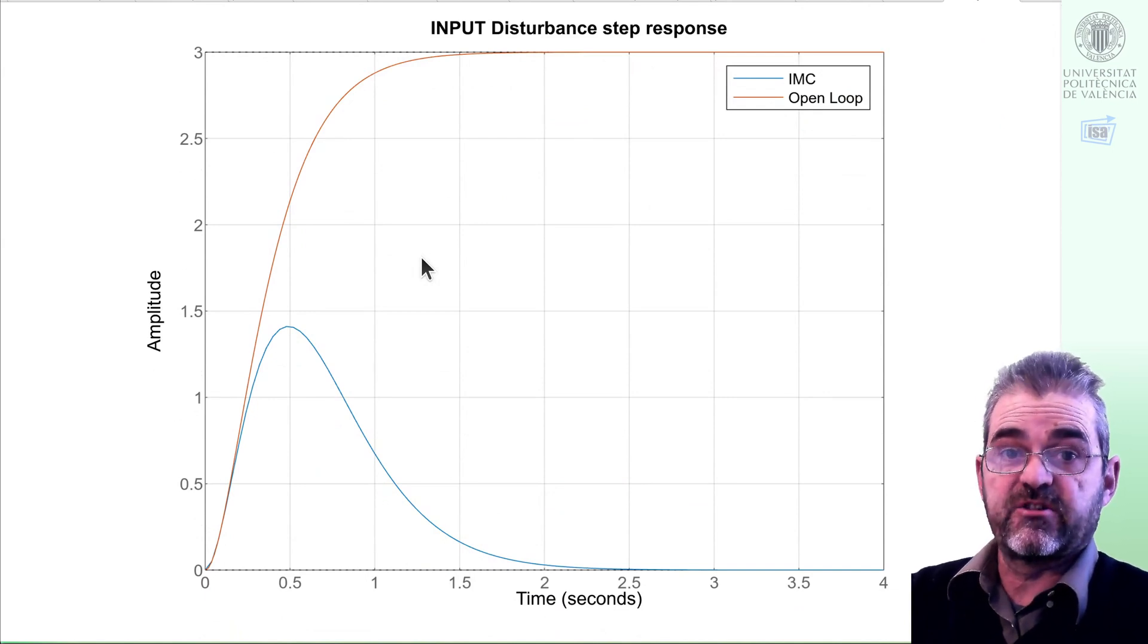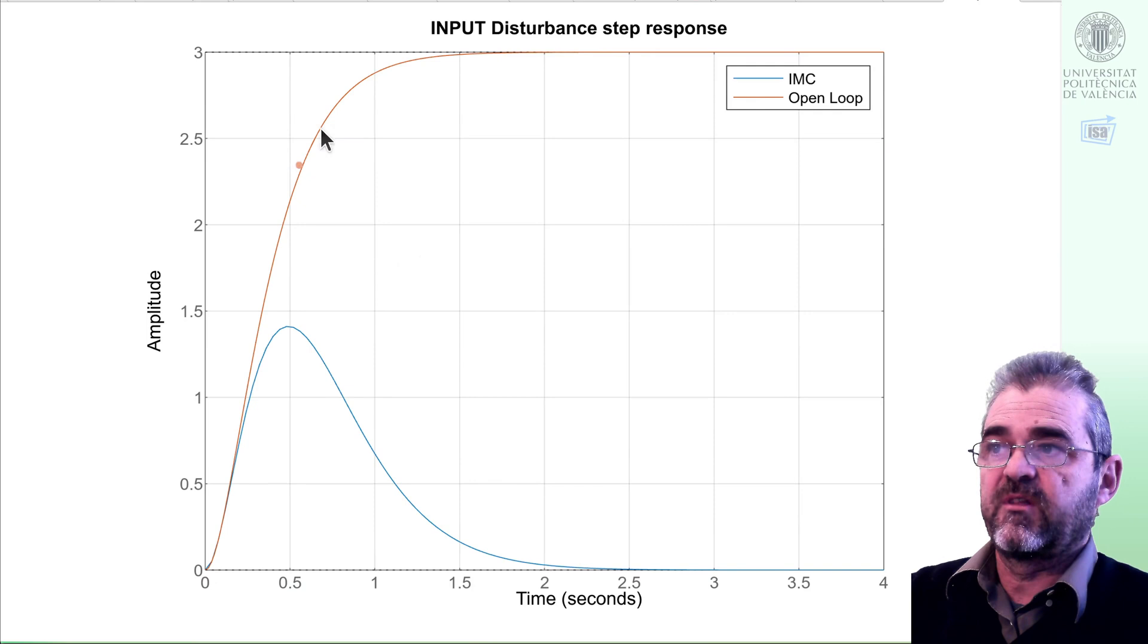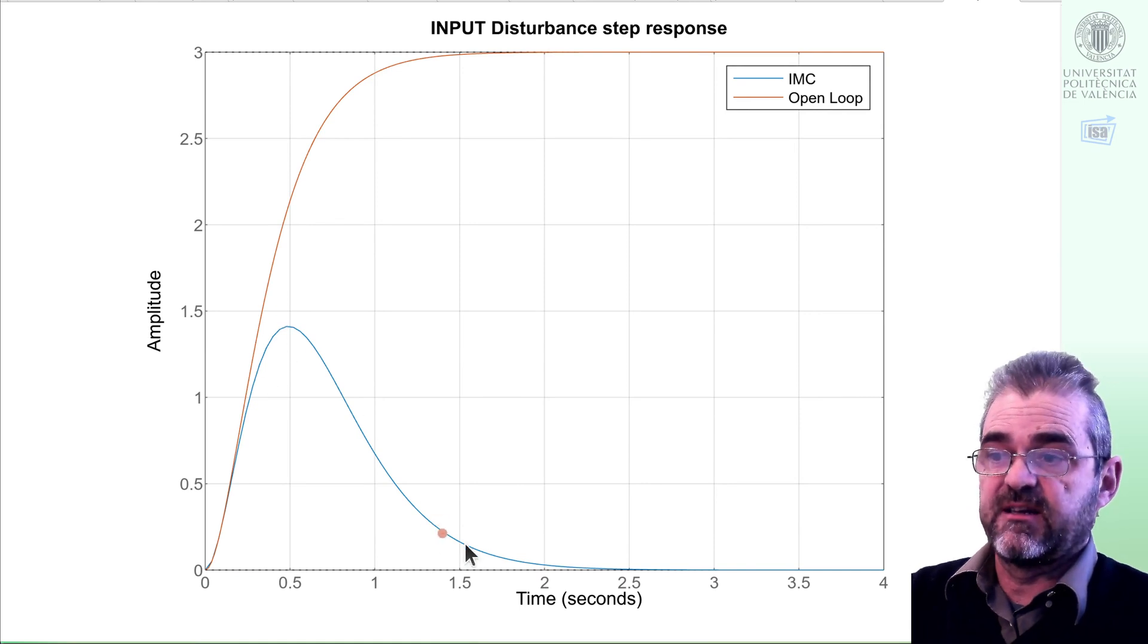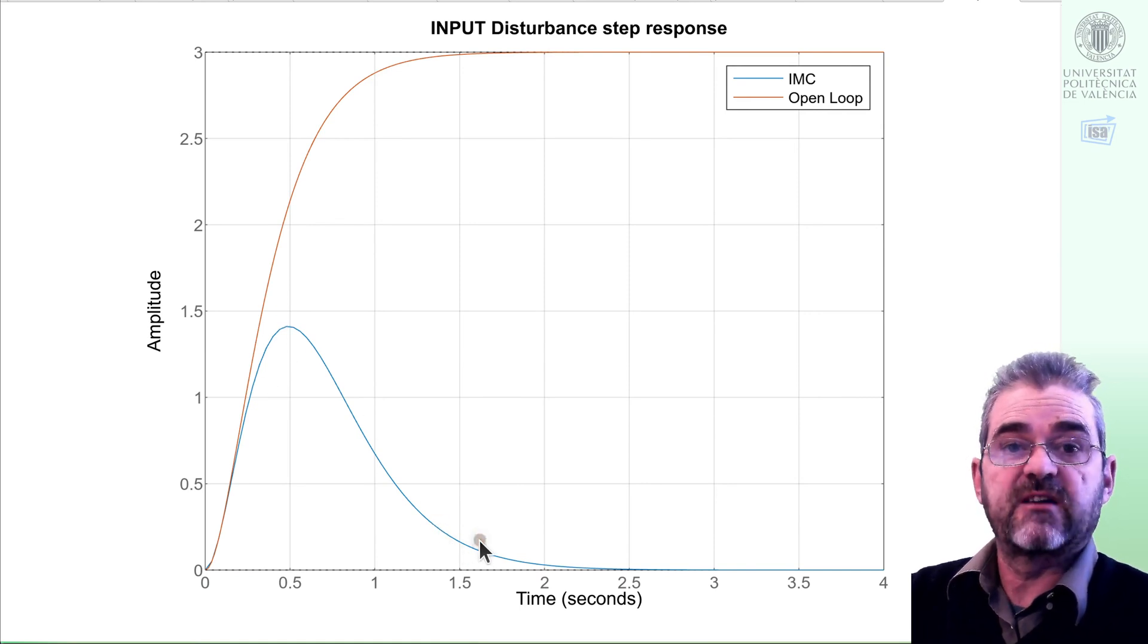Now if I plot the step response of GS, this is the effect of an input disturbance in the output. So in open loop, it's just the transfer function G, because if I have no feedback I would never realize that the output has drifted. But the internal model control feedback loop with integral action ends up cancelling in 1.5 seconds the effect of the input disturbance.